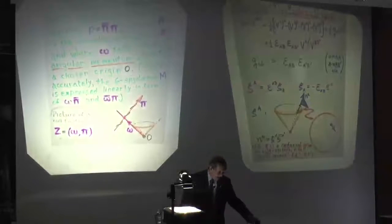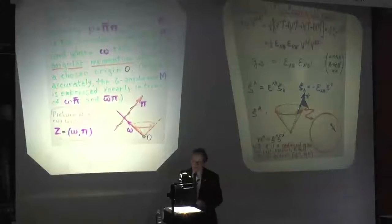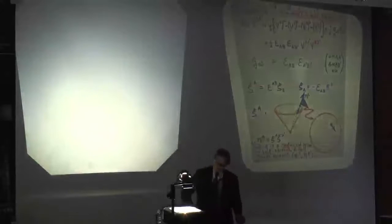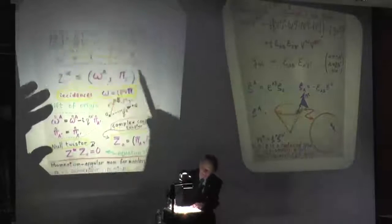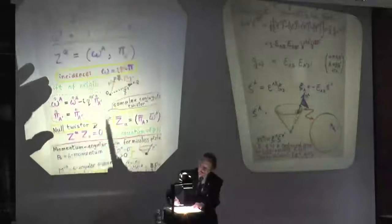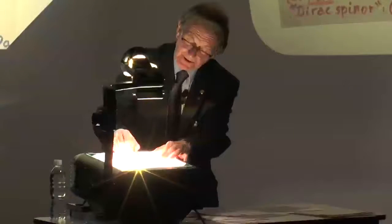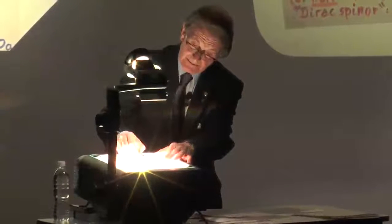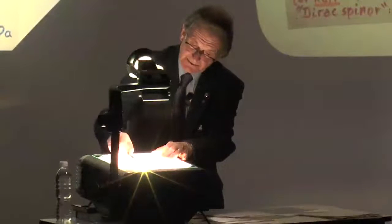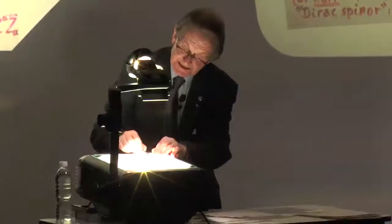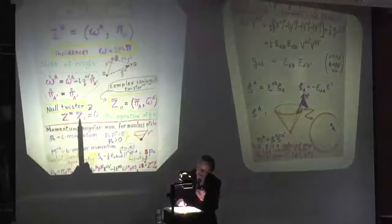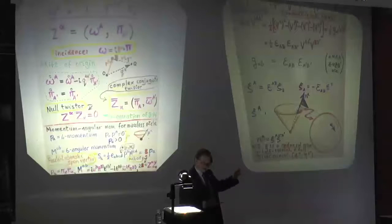Now I'm going to show you the equations. Here is the incidence relation I had before — this is the twister written as a spinner with an index, which I find very handy. This is the moment part, this is the momentum part — the moment about the origin. Here is the incidence relation without indices. This is what happens when you shift the origin. And ZZ-bar was the equation written at the bottom to tell you when you had a null twister — the ones geometrically representing light rays. That's when ZZ-bar is zero.